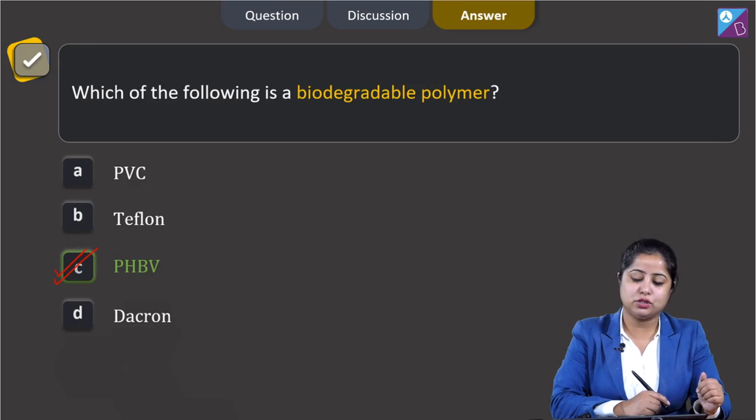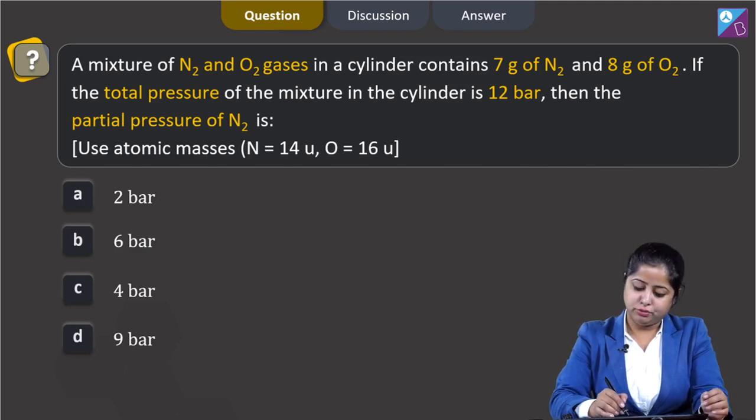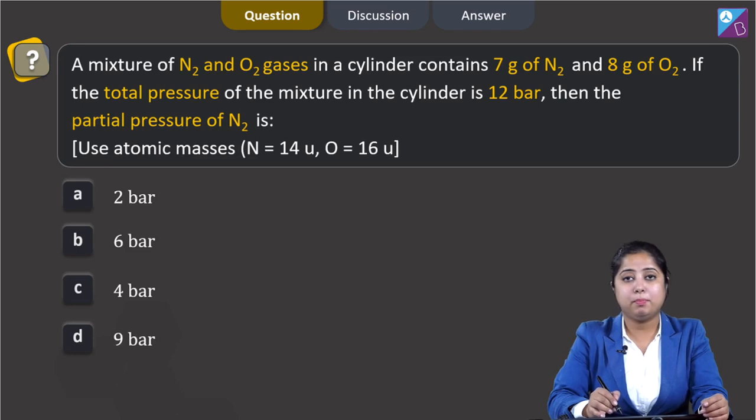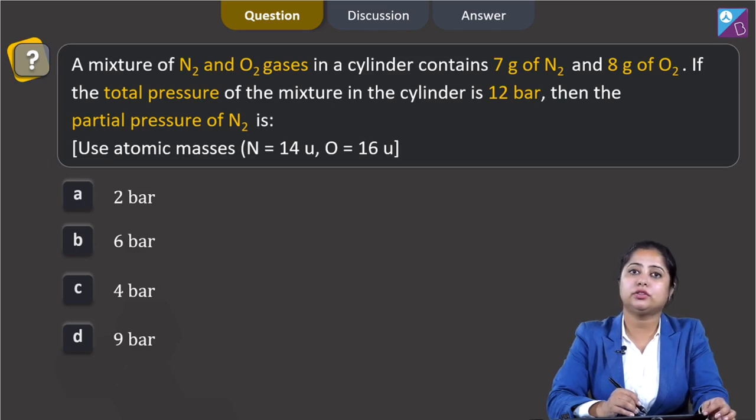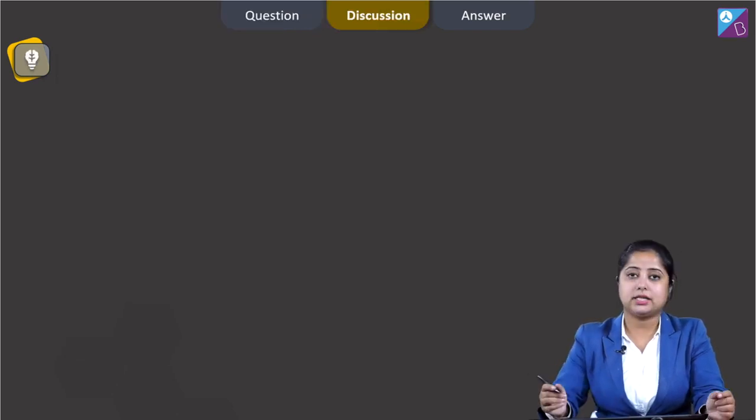Let us move to the next question. A mixture of N2 and O2 gases in a cylinder contains 7 gram of N2 and 8 gram of O2. If the total pressure of the mixture in the cylinder is 12 bar, then the partial pressure of N2 is? We are given atomic masses: nitrogen is 14U and oxygen is 16U. The options are 2 bar, 6 bar, 4 bar, and 9 bar.